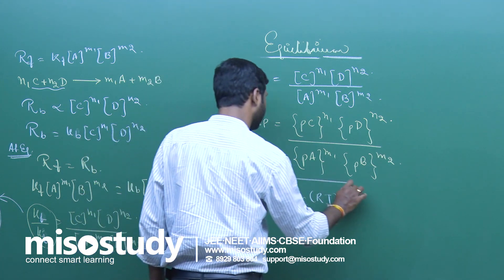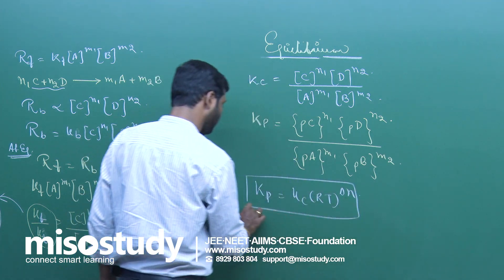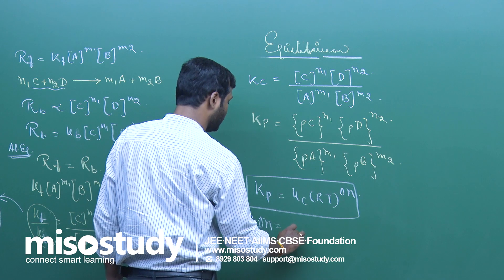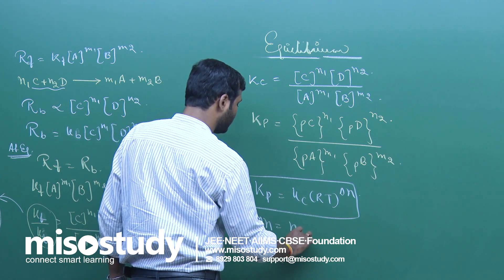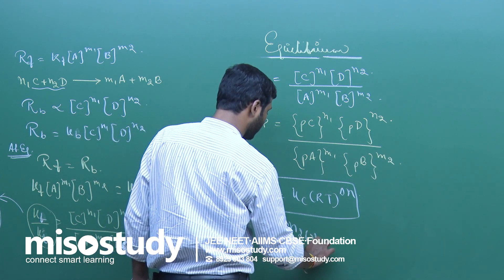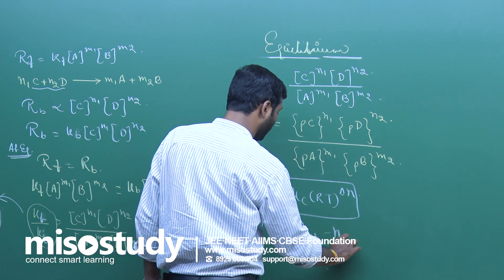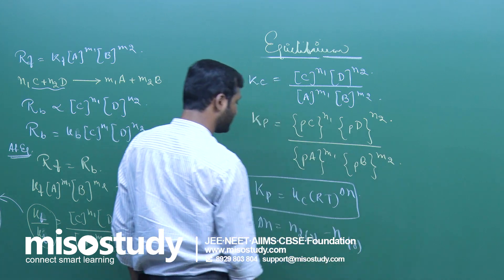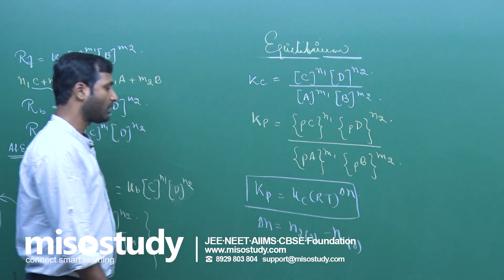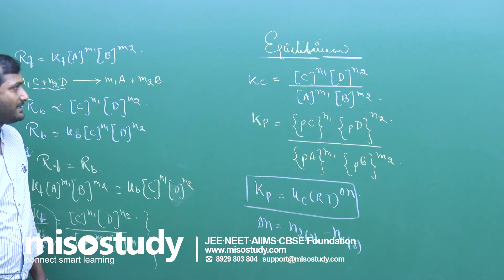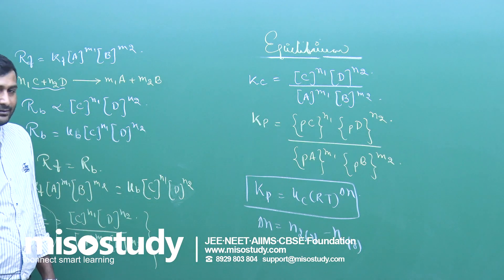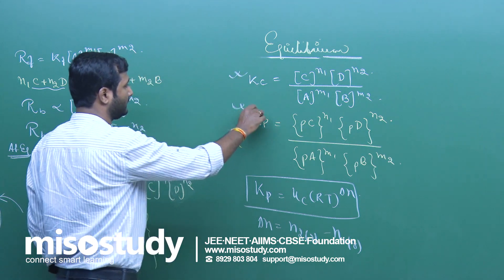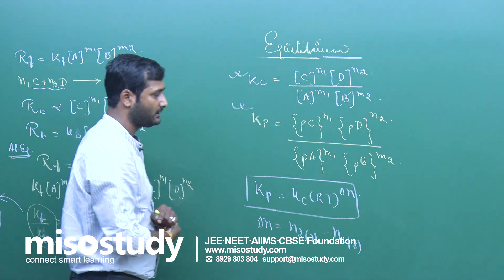What is delta N? Delta N equals N2 minus N1, that is the number of moles of gaseous product minus the number of moles of gaseous reactant.